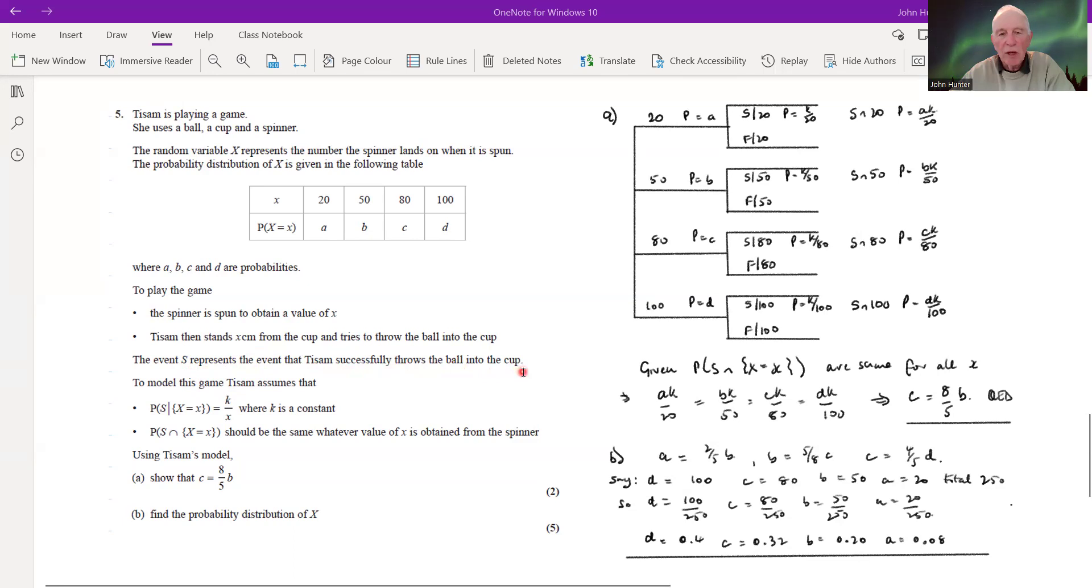The event S represents the event that Tisam successfully throws the ball into the cup. I think we can see that actually, the higher the value on the spinner, the more difficult it's going to be to get in the cup, and we would expect the probability to be lower for achieving success in that throw.